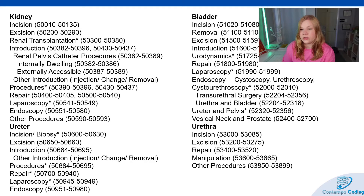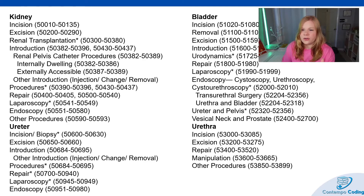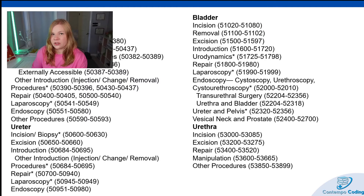Now we're getting into the ureter section. Biopsies and incisions are in code range 50600 through 50630. Then we have excisions of the ureter, introductions, other introductions, procedures, repair, laparoscopy, and endoscopy. Then we're getting into our bladder section.